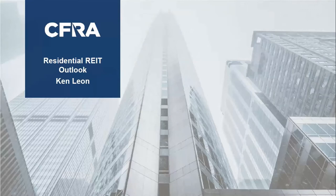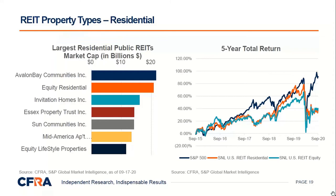Moving on to residential REITs. Many of the leaders — Avalon Bay, Equity Residential, Essex Property — have portfolios in coastal markets: Boston, New York, Washington D.C., Seattle, and California. We've seen probably the biggest downturn in residential properties for those geographies. The more stable areas have been the Sun Belt or Class B buildings, which are older and a little more stable. Invitation Homes is a play on single-family rental homes; Sun Communities is a play on leisure/retirement manufactured homes and RVs; Equity Lifestyles is similar.